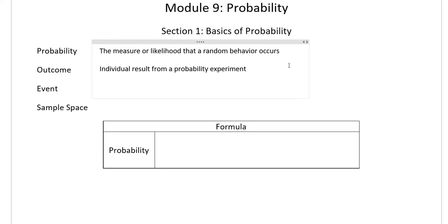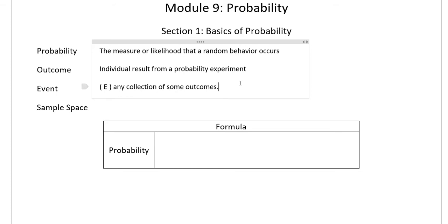What we're more concerned with is what we call an event. An event — which we usually represent with a capital letter like E — is any collection of some outcomes. We use a capital letter because events tend to be more complicated than just a one-word thing. For example, the probability of getting an even number on a six-sided die takes a lot to write, so we simplify it with capital E to represent 'even.' That's a lot easier to use in mathematical notation.